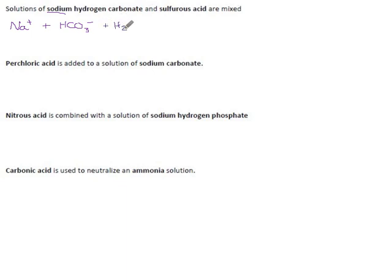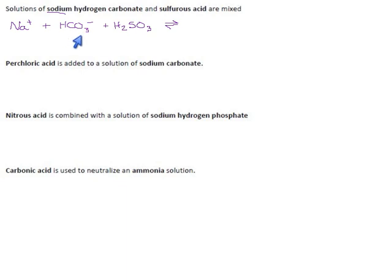We also get sulfurous acid, which is H₂SO₃ — it's what happens when hydrogen sulfite gets wet. Now we get into a bit of a bind because either one of these could be an acid; they both contain hydrogen. You could say that HCO₃⁻, because it's negative, is a much better candidate for a base, and that's true — it could easily take up one more hydrogen and become H₂CO₃.